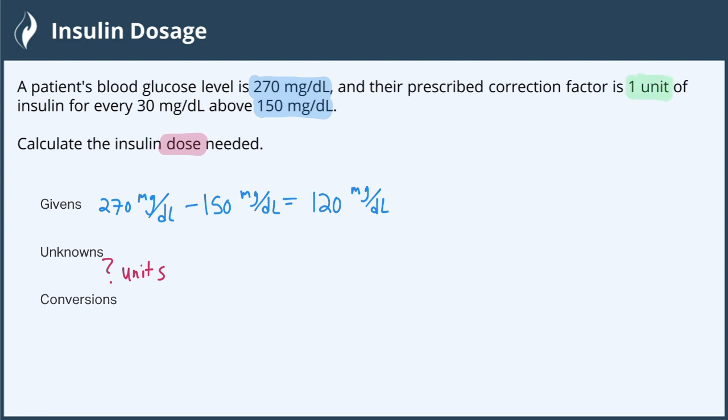So what are our conversions? Well, we know there's one unit of insulin for every 30 milligrams per deciliter above 150. So we can say one unit is going to be for every 30 milligrams per deciliter.